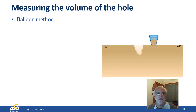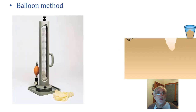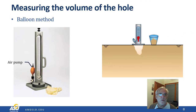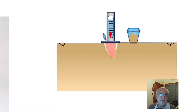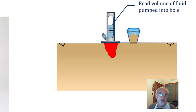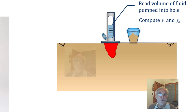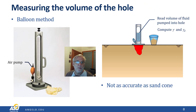The third method used to measure the hole volume is called the balloon method. This method uses a special graduated cylinder apparatus with a balloon inside and a hand pump to pump air into the cylinder. The cylinder is filled with water and placed over the hole. As air is pumped in, it fills the balloon with water and pushes it down into the hole. Once the balloon has completely filled the hole, we can read the volume of water pushed into the hole and compute the dry unit weight. This method is not as accurate as the sand cone method because it's difficult to get the balloon to completely conform to the shape of the hole, especially if the fill material contains larger gravel pieces.